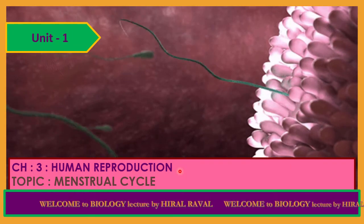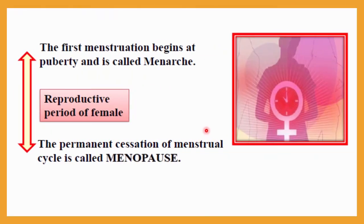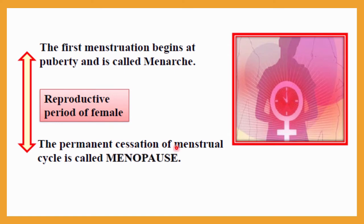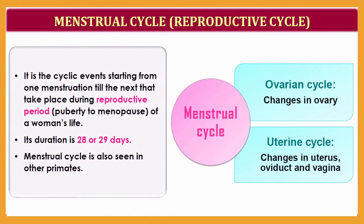Today we are going to discuss the menstrual cycle. First, let me go through two terminologies: menarche and menopause. Menarche is the first menstruation, which begins at puberty. Menopause is the permanent cessation or stop of the menstrual cycle. The duration in between menarche and menopause is considered the reproductive period of a female.